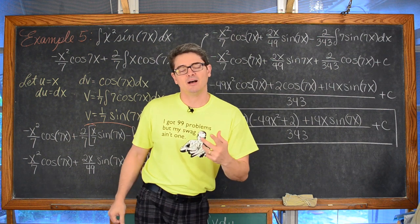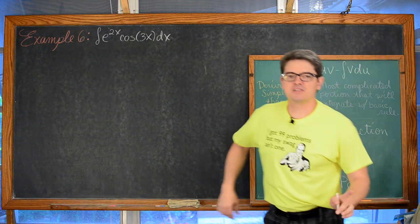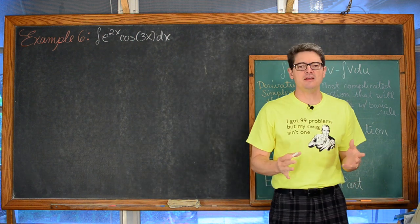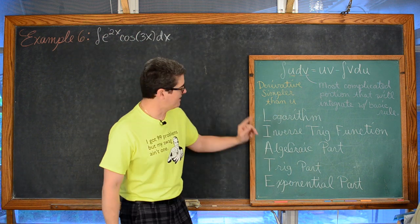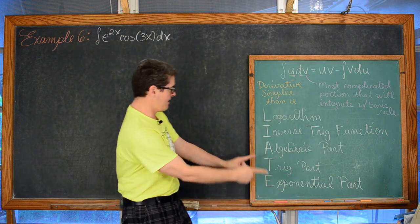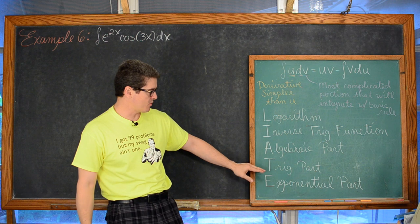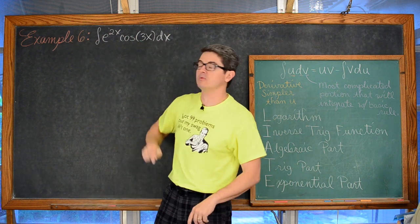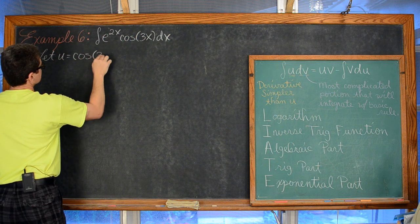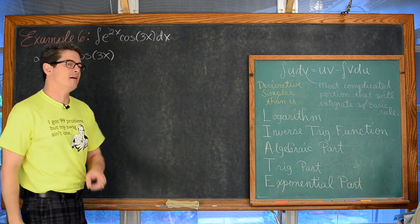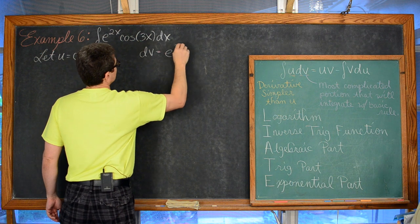Now for our last example, number 6: find the indefinite integral of e to the 2x cosine of 3x dx. Running through LIATE one last time — do we have a logarithm? No. An inverse trig function? No. An algebraic part? No. A trigonometric factor? Yes — cosine of 3x. So we let u equal cosine of 3x, meaning dv — which must include dx — is e to the 2x dx.